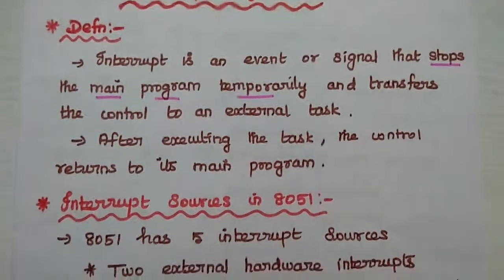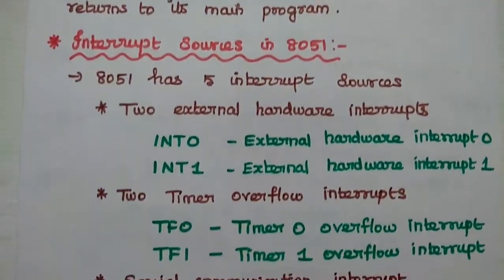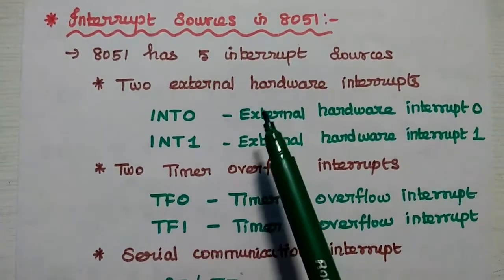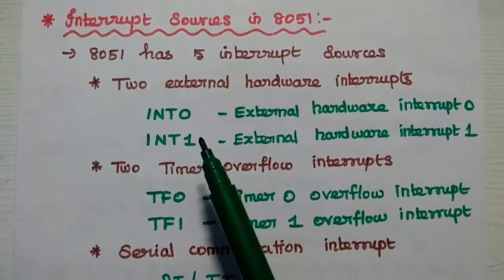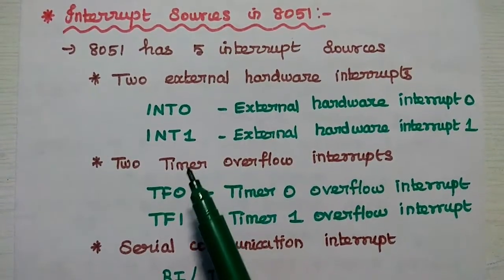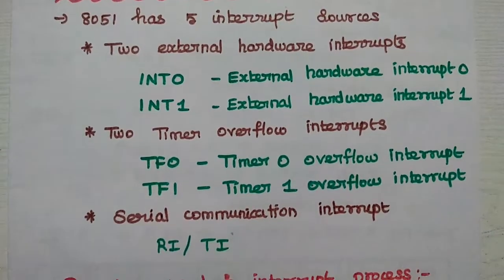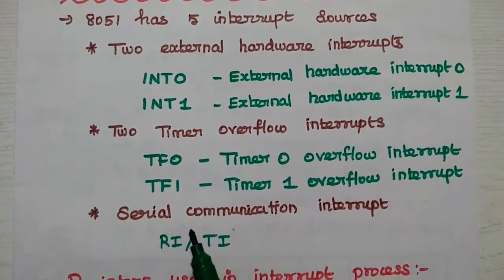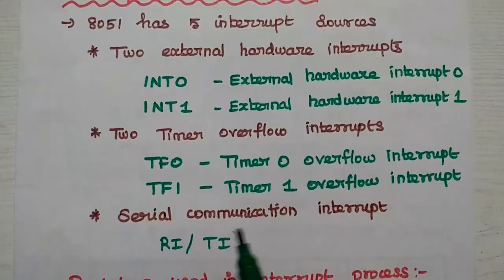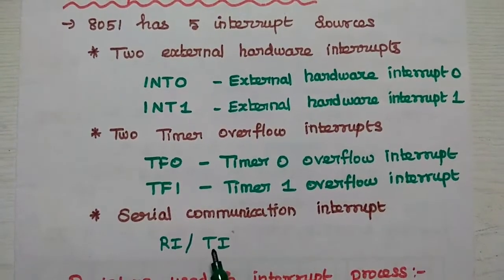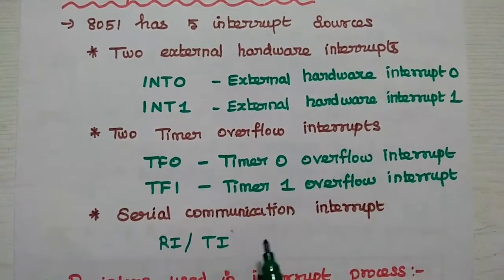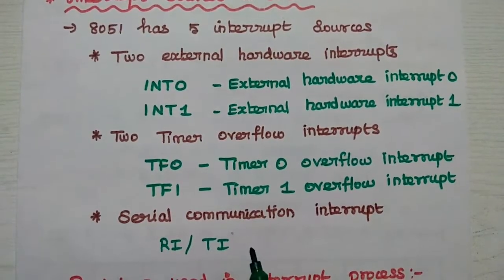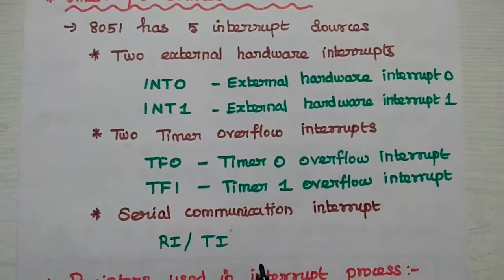There are five interrupt sources available in AT51. Two external hardware interrupts: INT0 and INT1. Two timer overflow interrupts: TF0 and TF1. One serial communication interrupt: RI slash TI. Here RI means receive interrupt and TI means transmit interrupt.